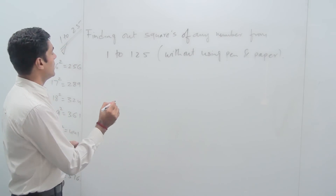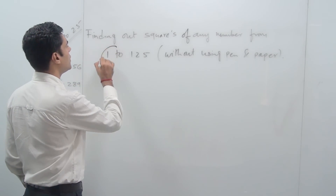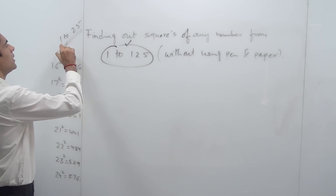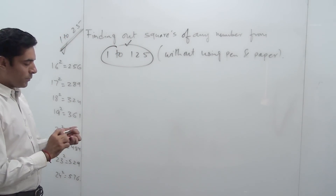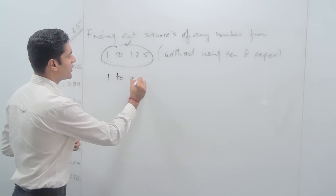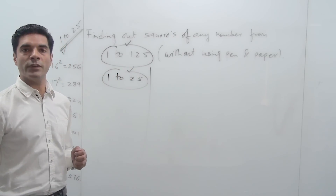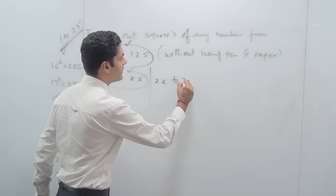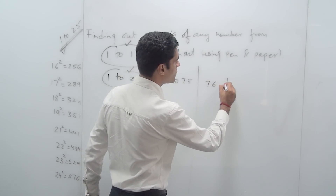The only prerequisite for finding out squares of any number from 1 to 125 is that you must remember squares of numbers from 1 to 25. So that is something that you must know. Now I can divide this into three sections: 1 to 25, 26 to 75, and then from 76 to 125.